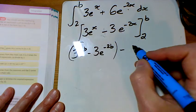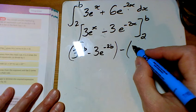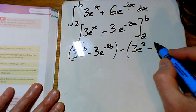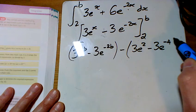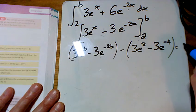And sticking the 2 in, I've got 3e^2 minus 3e^(-4). And we've been told that equals 0.